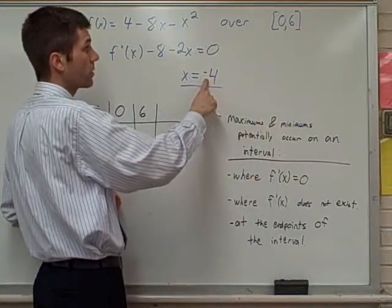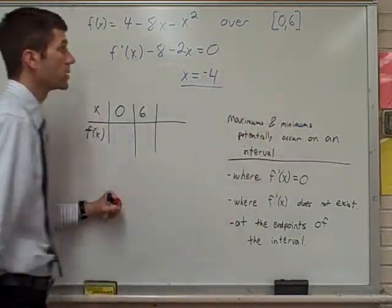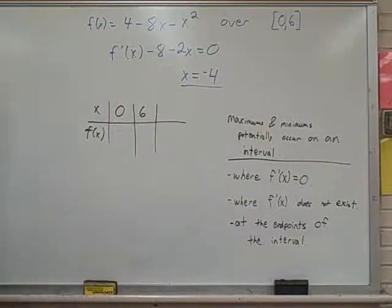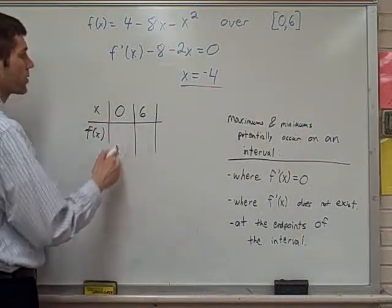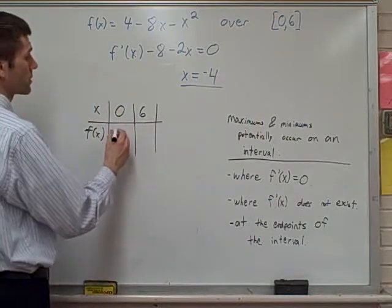If this was a positive four, then sure enough, we'd go with it. But it's not. It's negative four. We're going to plug a zero into the original. Plugging a zero into the original gives us a four.